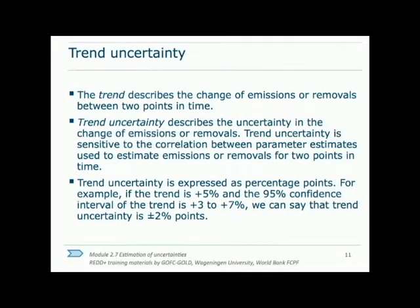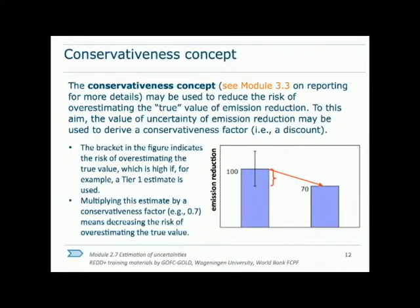Trend uncertainty means the uncertainty in the change of emissions between multiple periods of time. This is similar to any sort of uncertainty, but is restricted to that of the change in emissions or removals. For example, if the trend is 5% but with a 95% confidence interval of plus or minus 2%, then the trend uncertainty would also be plus or minus 2%. Good practices require that between over and underestimating emission reductions, they should be underestimated, and uncertainty estimation can verify that the estimate is not an overrepresentation of the true value.